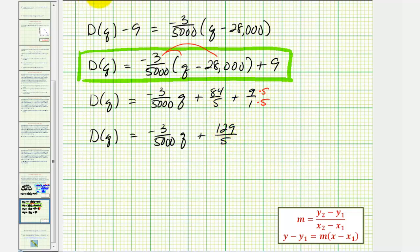So again, we can go ahead and leave the demand function in this form here, or if we want, we can write it in slope-intercept form, which would be this form here. I hope you found this helpful.